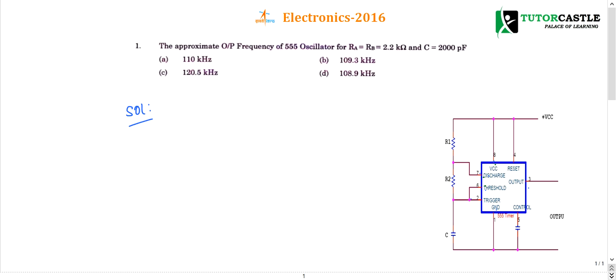The approximate output frequency of a 555 oscillator for Ra equal to Rb equal to 2.2 kilo ohms and C equal to 2000 picofarads is asked. This question is quite simple and straightforward, formula based. But let us see the concepts behind this.